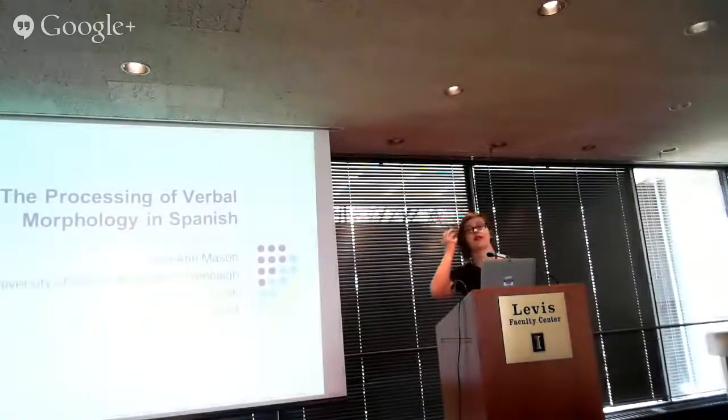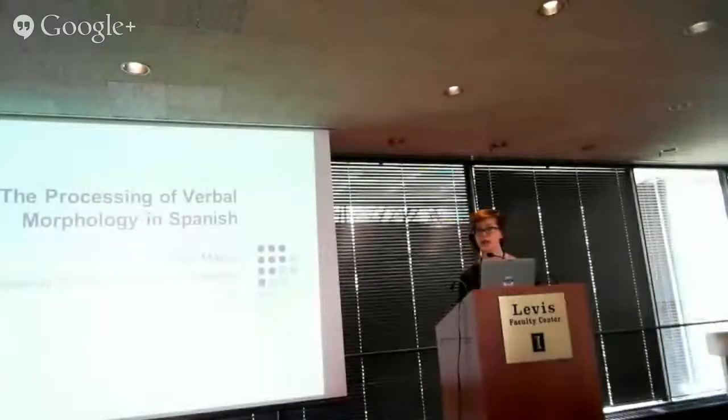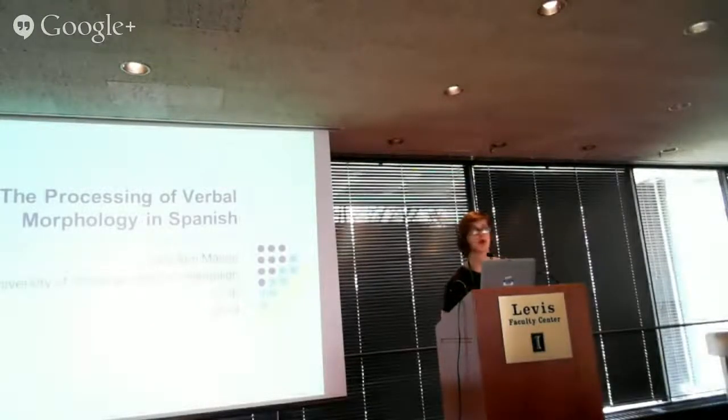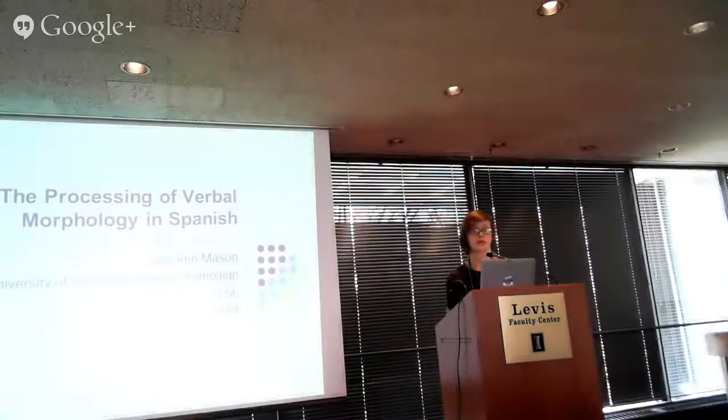So like many people here, I'm interested in what do second language, native, and heritage speakers know about the morphology of their language, and how do they access and use that knowledge, particularly in regards to regular and irregular morphology. So the basic question is, are those two kinds of morphology represented and processed in the same ways, or are they represented and processed in different ways?